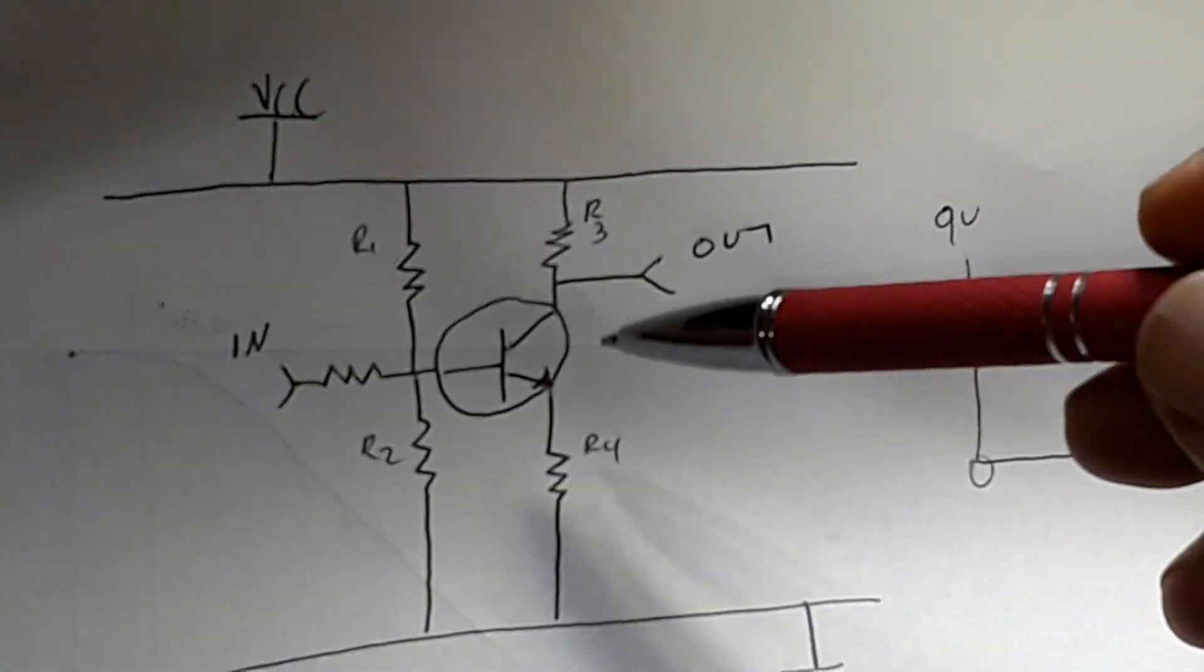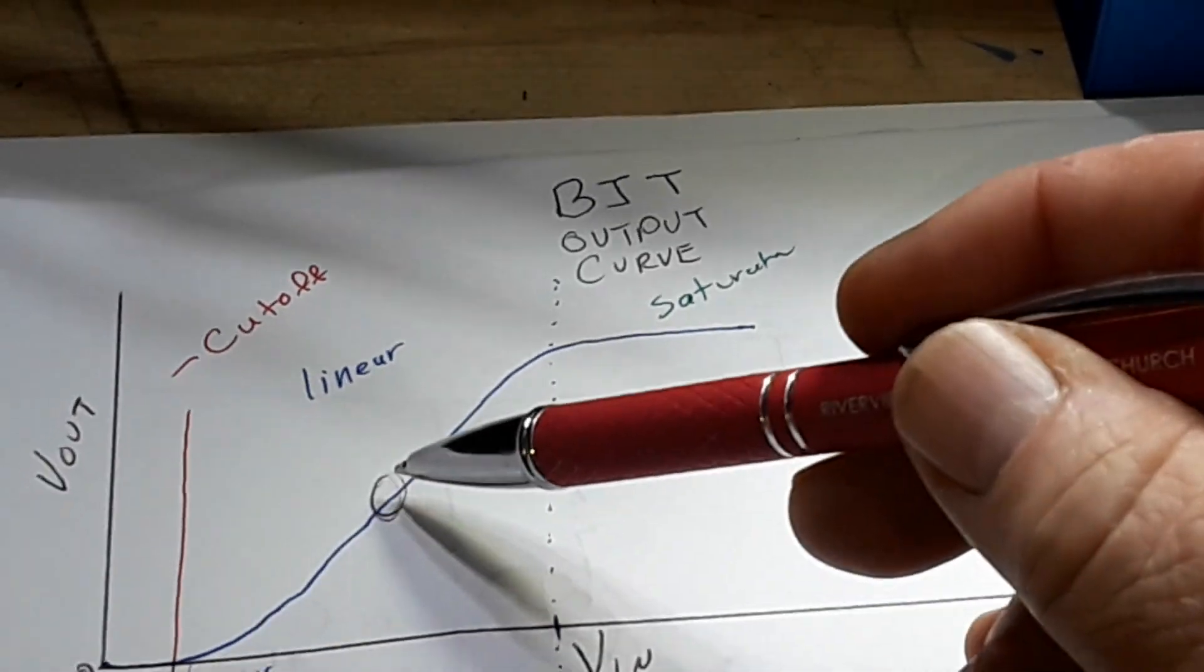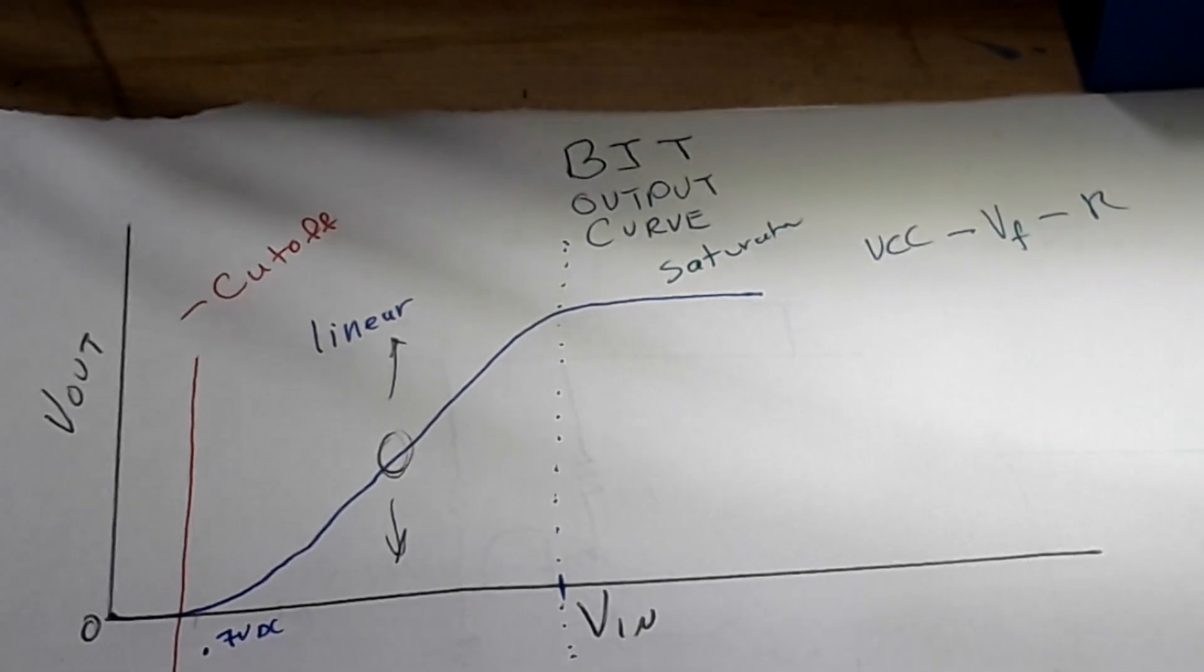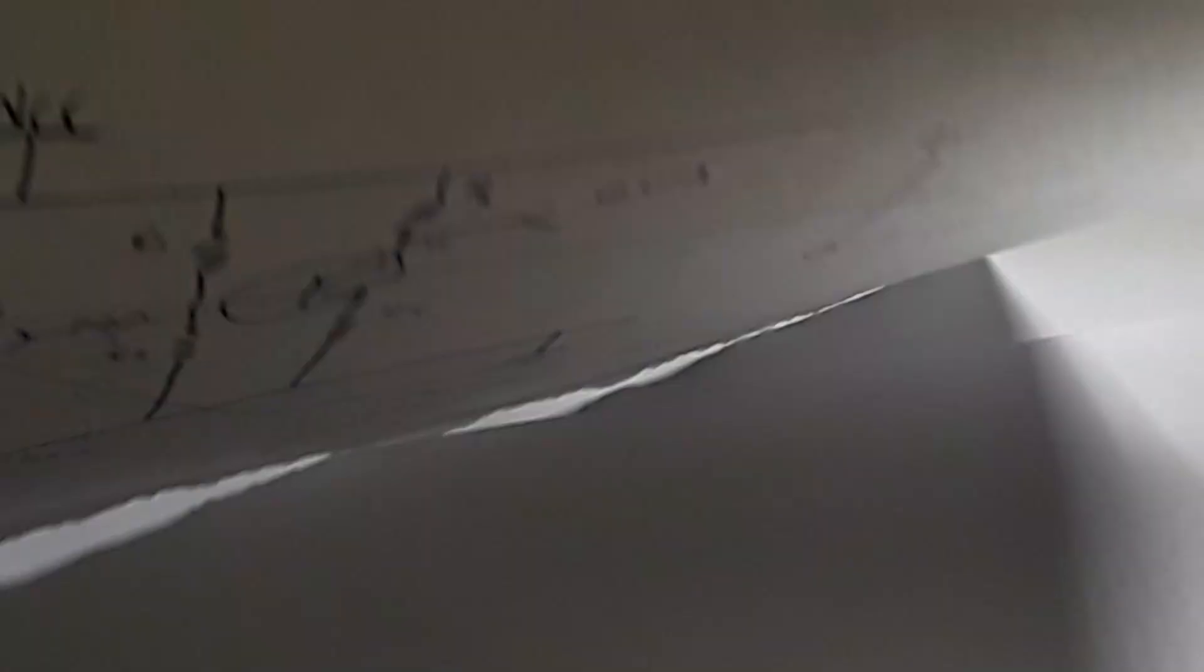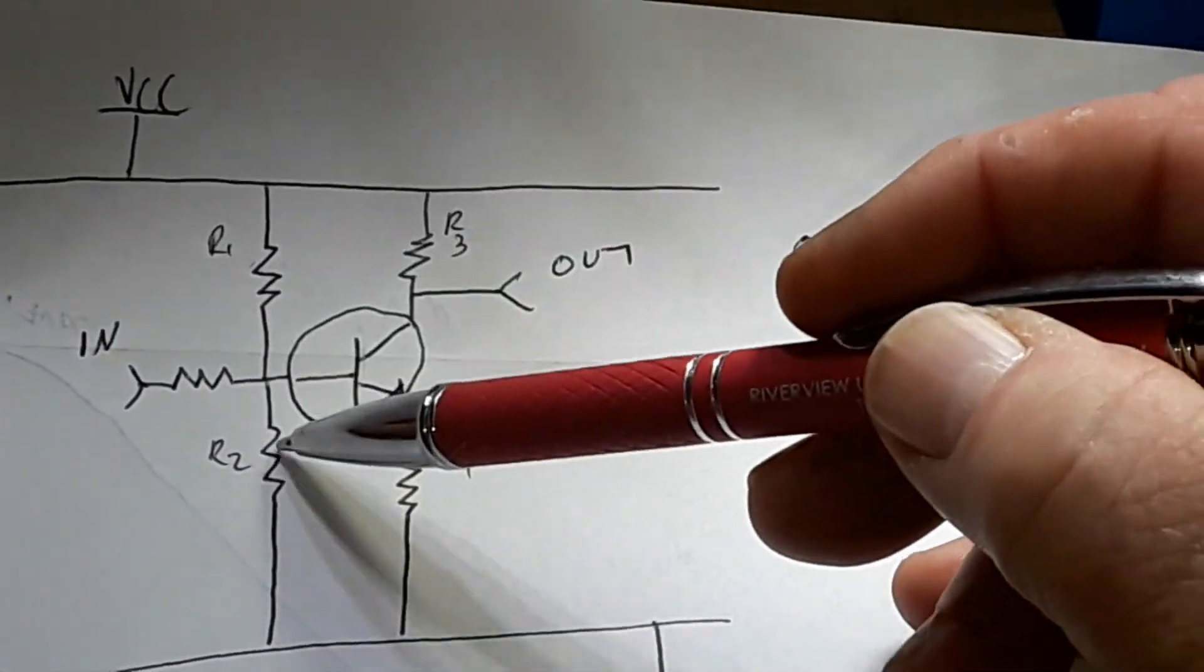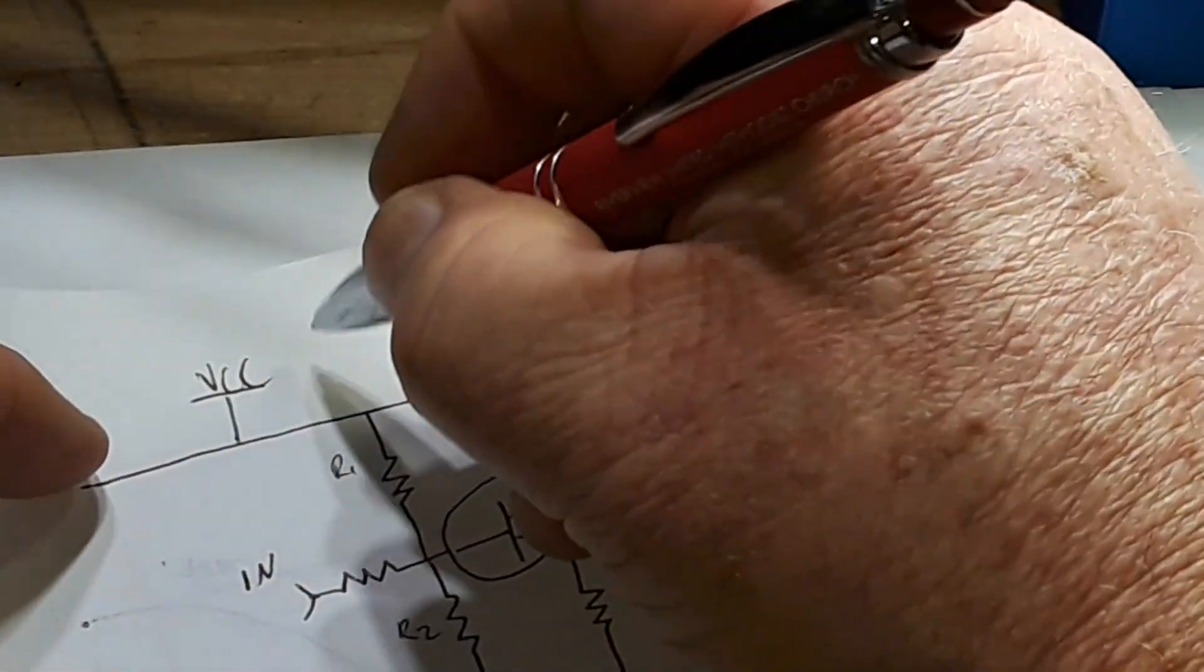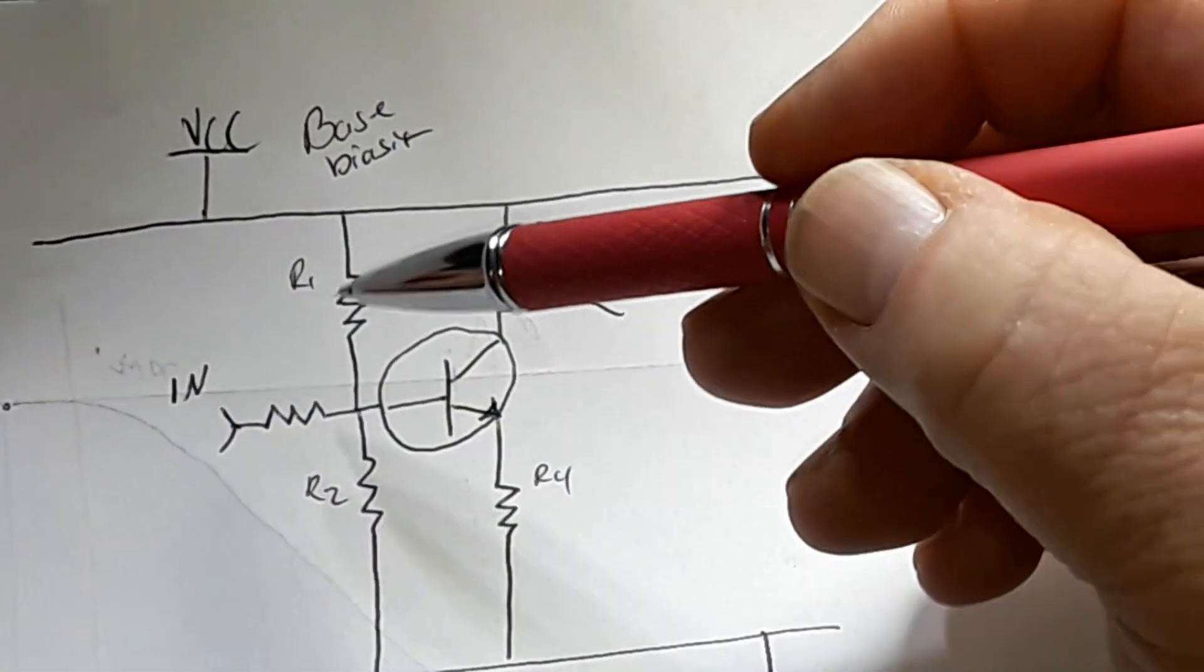So what we've done is we have created a voltage divider. Right here, R1 and R2 create a voltage divider that is going to hold that transistor open in the middle of that linear region and allow it to swing up and down, which would give us basically an AC type output.